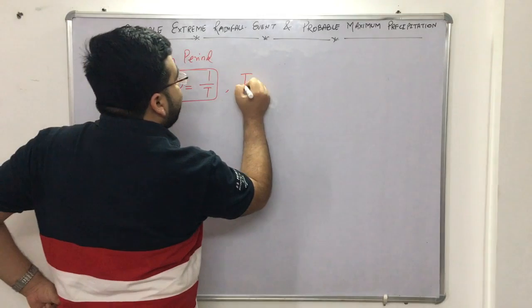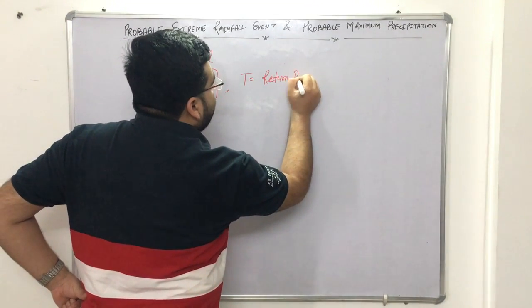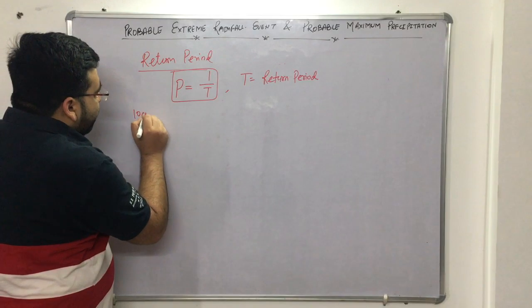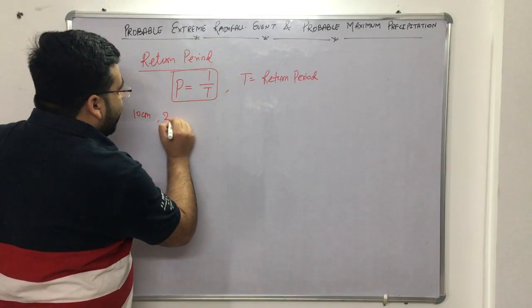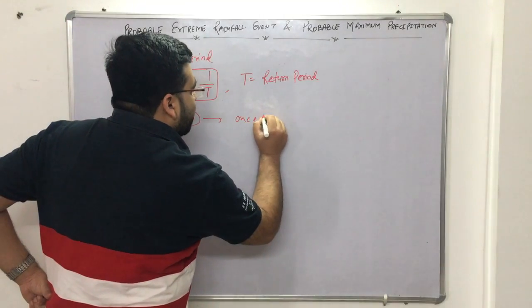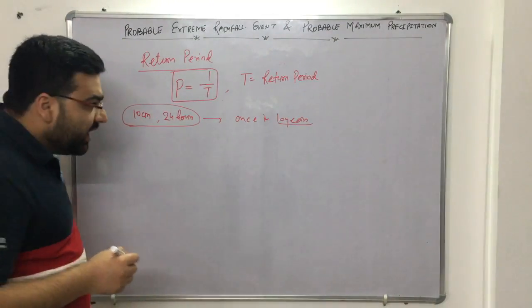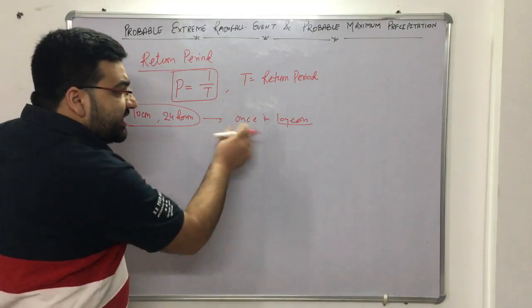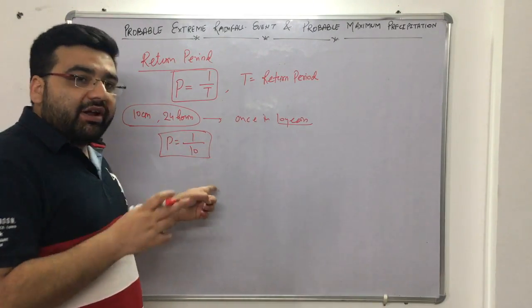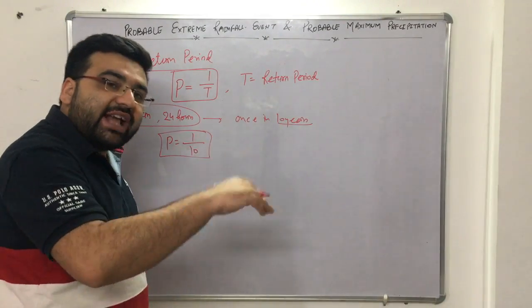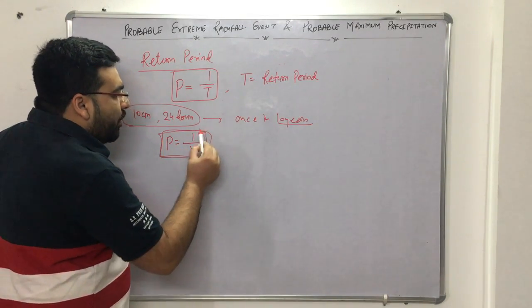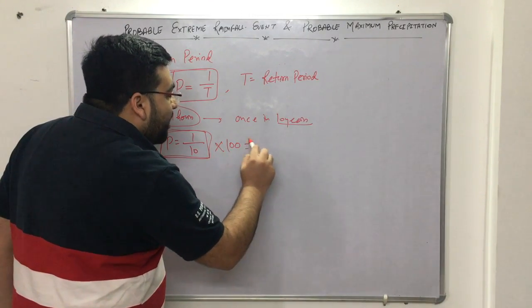For example, consider a storm of 10 centimeter depth lasting continuously for 24 hours, occurring once in 10 years. The probability of it occurring in any particular year is 1/10. Over the next 100 years, this storm can be expected to occur approximately 10 times.